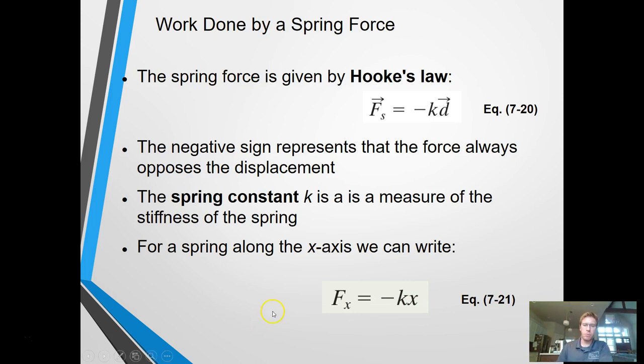So what does this have to do with work? We can figure out the work being done by a spring. A lot of people want to say, oh, force equals negative KX. Work is force times distance. So negative KX times X, that's just going to be negative KX squared. No, that's wrong. It's wrong because the force varies. If you are pulling it back one meter, you're going to have a given force. If you pull it back two meters, now it's requiring double the amount of force. So let's figure this out.